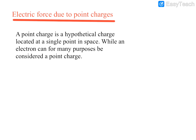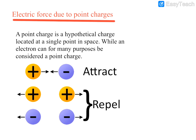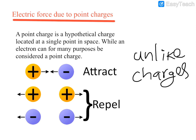Now let us move on to electric force between point charges. There are some charges given. You can see one positive charge and one negative charge placed near to each other, with some distance between them. This is positive and this is negative — they are opposite charges. When there are opposite charges, they are said to be unlike charges.